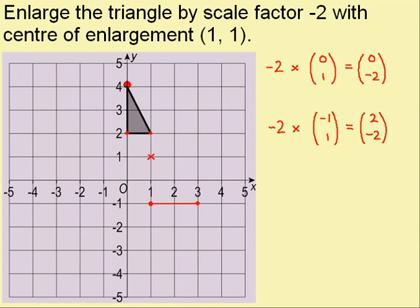And now I need to do the third corner, that's this one here. So again I need to write a column vector to get to it from the centre of enlargement. So it's left 1, up 3. So that's minus 1, 3. And I multiply this by the scale factor. So I've got minus 2 times minus 1, that's 2. And minus 2 times 3, that's minus 6.